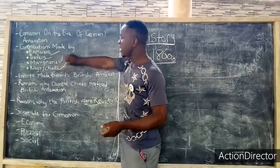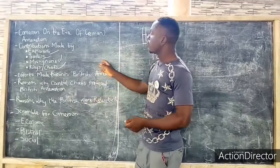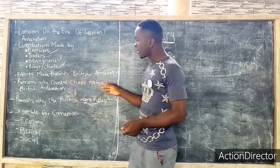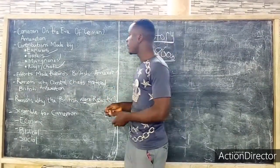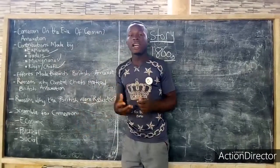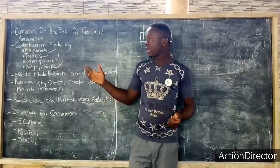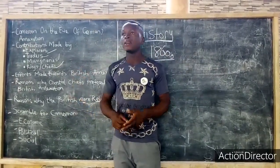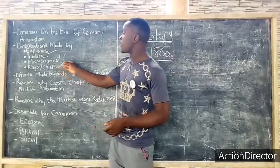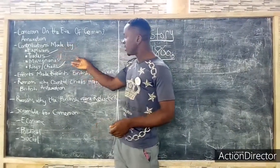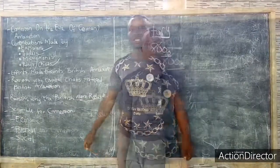We will be talking about the contributions of the kings and chiefs, which were also one of the main reasons that led to the scramble for Cameroon. The kings and chiefs held nightly meetings with the traders and missionaries. They also accepted bribes from the traders and wrote letters seeking for the annexation of Cameroon. Those were all the contributions of the missionaries, explorers, traders, kings and chiefs in the annexation of the Cameroon territory.